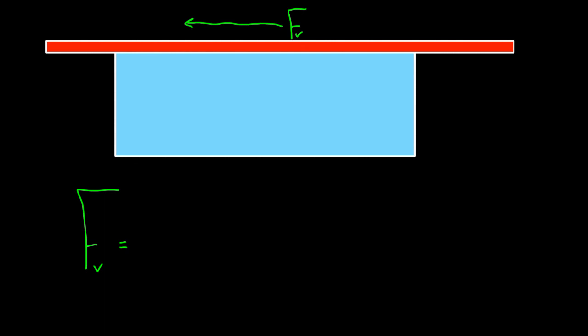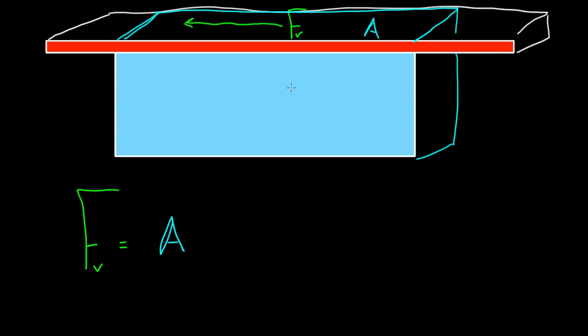What does this viscous force depend on? One thing it depends on is the area, and not the whole area of the lid. It's just the area of the lid that's actually in contact with the fluid. So if you imagine the dimensions of this box would only expand here, so it's only that part of the lid that's actually in contact with the fluid. So that area, and it's proportional to that area. The bigger that area, the more fluid you're going to be dragging, the larger the viscous force, that makes sense.